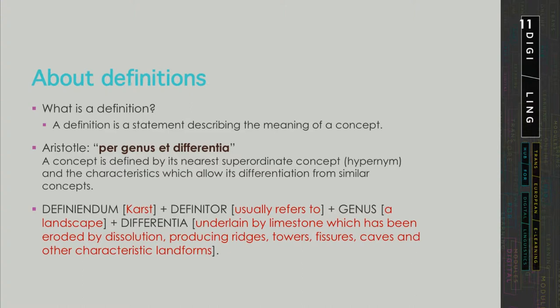This principle is also called per genus ad differentia, and means that a concept should be defined by providing its nearest hyponym — the genus — and the differentiating properties which distinguish it from neighbouring concepts.